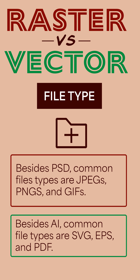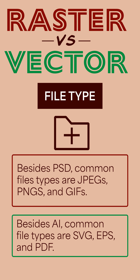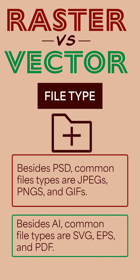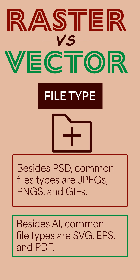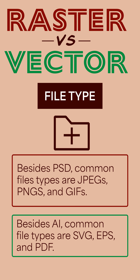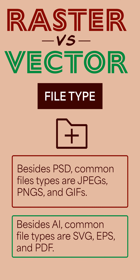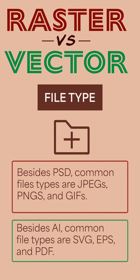Raster files can be saved as PSDs, JPEGs, PNGs, and GIFs. And vector files can be saved as AI, SVG, EPS, and PDF.